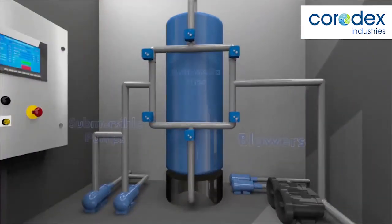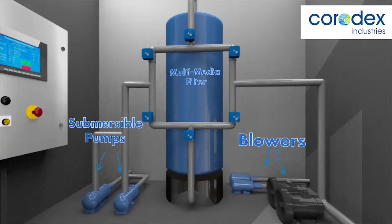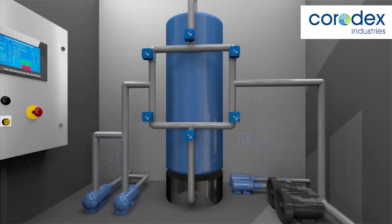The disinfected effluent is pumped to pressure multimedia filter to polish the effluent by further removing suspended solids. This filter is located in the control or machinery room along with other components like pumps, blowers, and control panel.